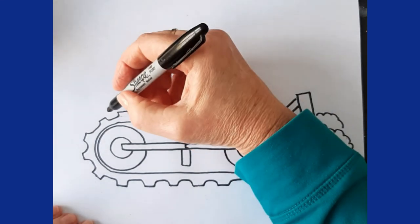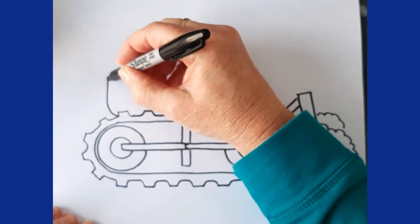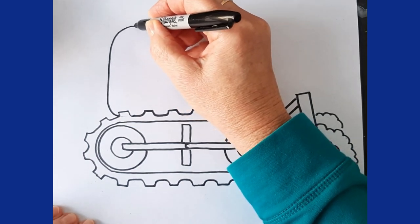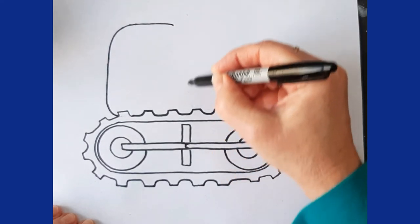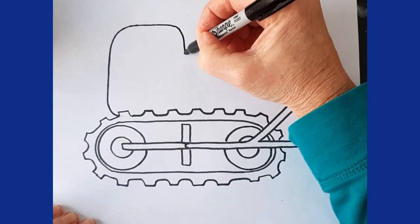Out here I'm going to kind of do a rounded body. I'm going to come up here fairly tall and round it around. You could make it pointed if you want. I'm going to come about to the halfway mark here before I start going down, and I'm going to come down like that.